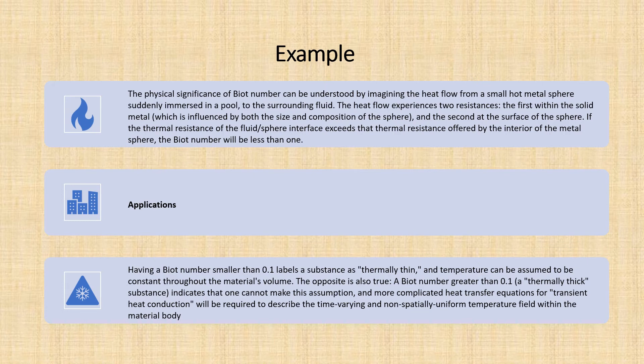Talking about applications, if we have a Biot number less than 0.1, the substance is called thermally thin and temperature can be assumed to be constant throughout the material's volume. While if we have a Biot number greater than 0.1, we call it thermally thick substance,